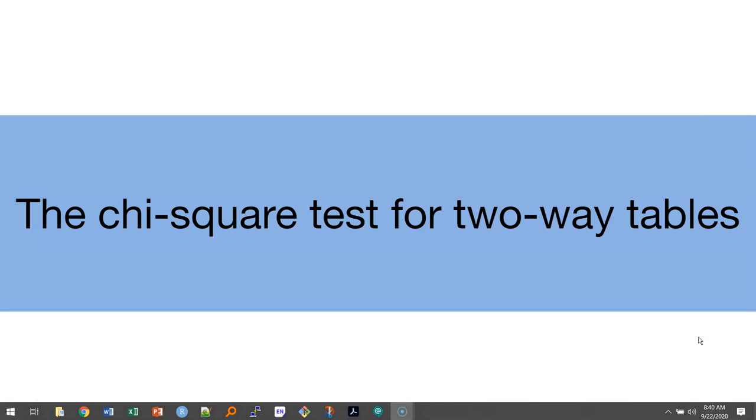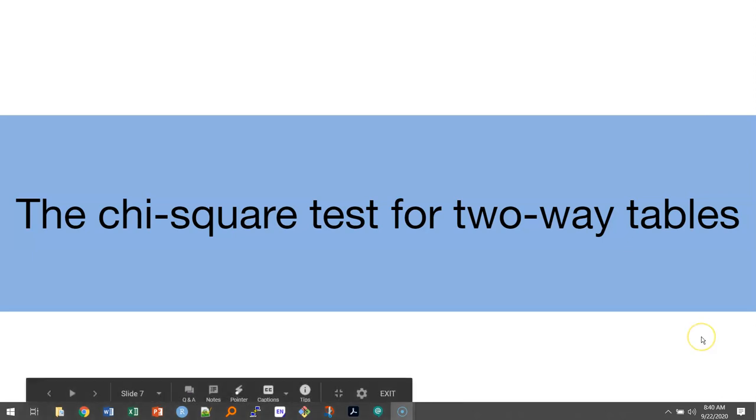We'll use the deer hunter data to look at the chi-square test for two-way tables. This is a really important significance test, especially when you're dealing with categorical data.